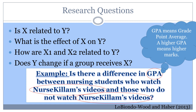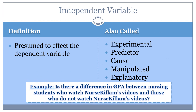If this was a research question, the study would outline a specific set of videos within the methodology. Watching the videos would be the independent variable. The independent variable is the one that the researchers think will have an effect on the dependent variable or variables under study. If the study is experimental, the researchers will manipulate this variable.